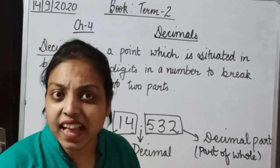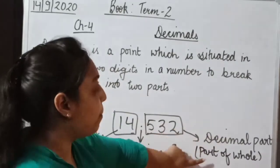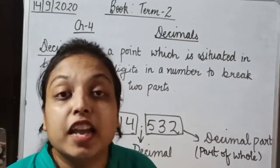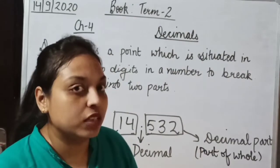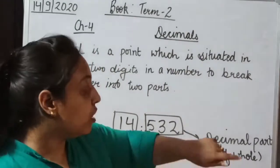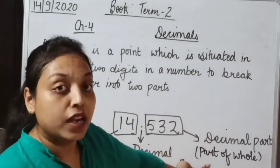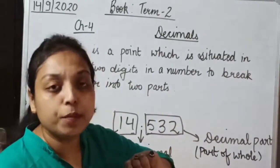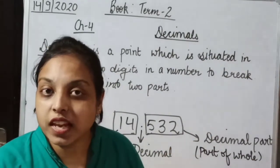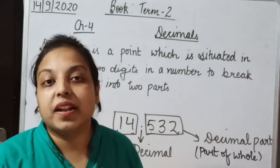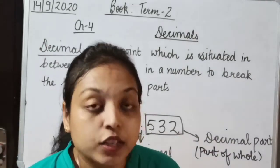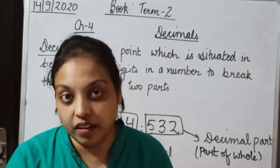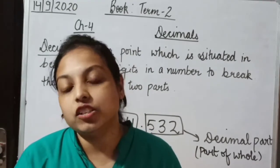Do you think that we have studied the concept of part of whole earlier? Yes — in the previous chapter on fractions, we studied that fraction means part of whole. The decimal part is also part of whole. It means both are the same, but the presentations are different. So we can say that fraction and decimal are interlinked and interrelated to each other.